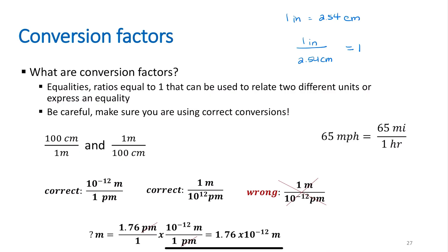Be careful to use the right conversion factors — this is where students mess up with metric conversions. For example, 100 centimeters equals one meter. I can write it with centimeters on top or meters on top; it's the same equality. I can also write it as 10² centimeters to one meter, or one centimeter equals 10⁻² meters. They all mean the same thing — figure out which way makes most sense to your brain.